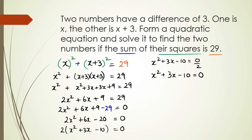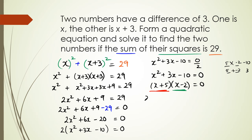Now I'm looking for two numbers that multiply to negative 10 and add to positive 3 — that's 5 and negative 2. So I factorize as (x + 5)(x - 2) = 0. Therefore either x + 5 = 0, giving x = -5, or x - 2 = 0, giving x = 2.